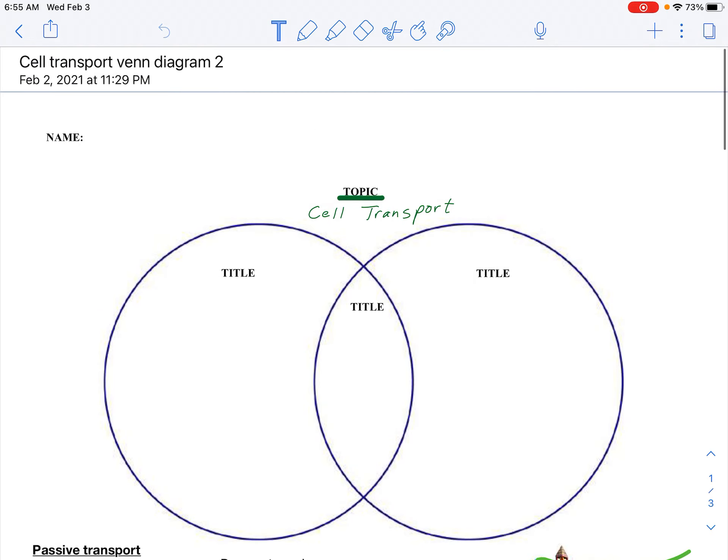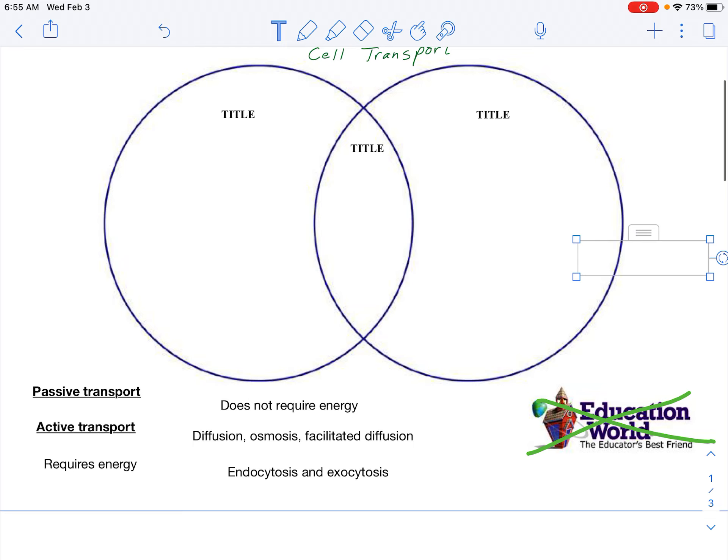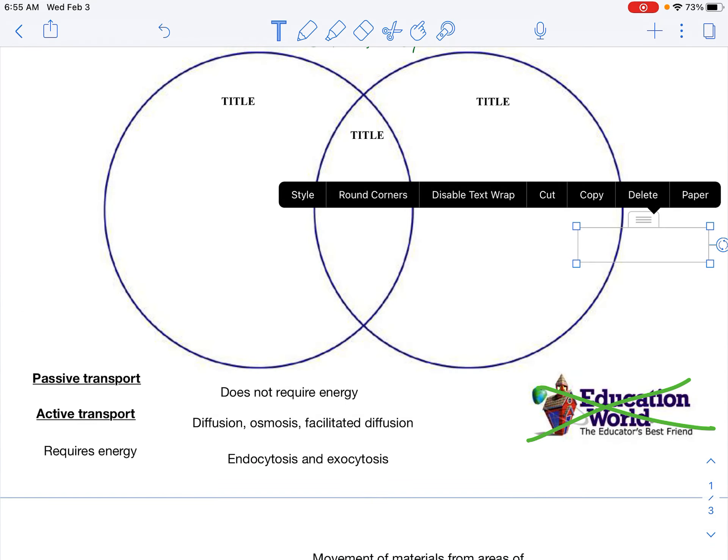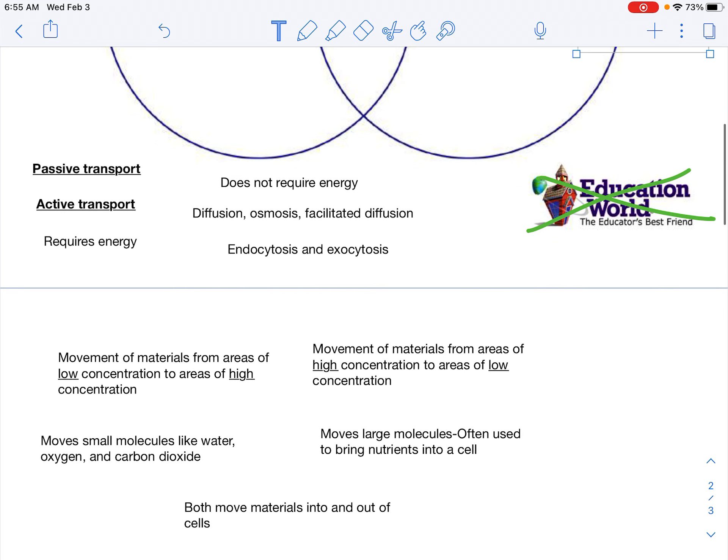So that's what you're going to be using, and then I've got a list of terms down here and you're just going to be dragging and dropping these into the correct circles on the Venn diagram.